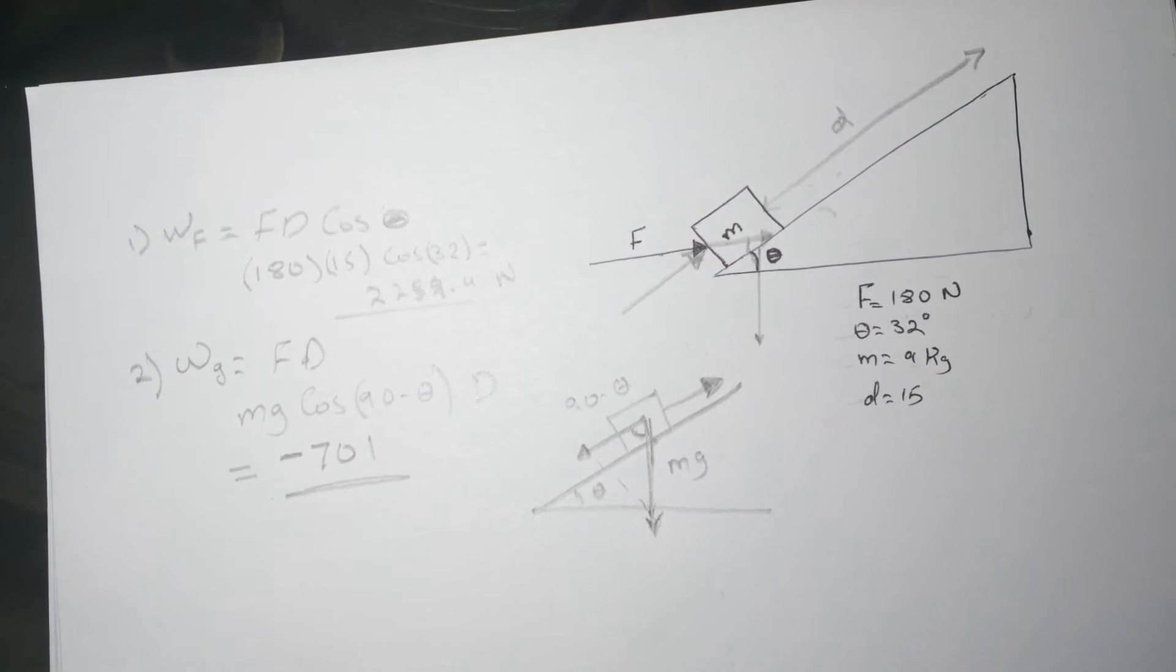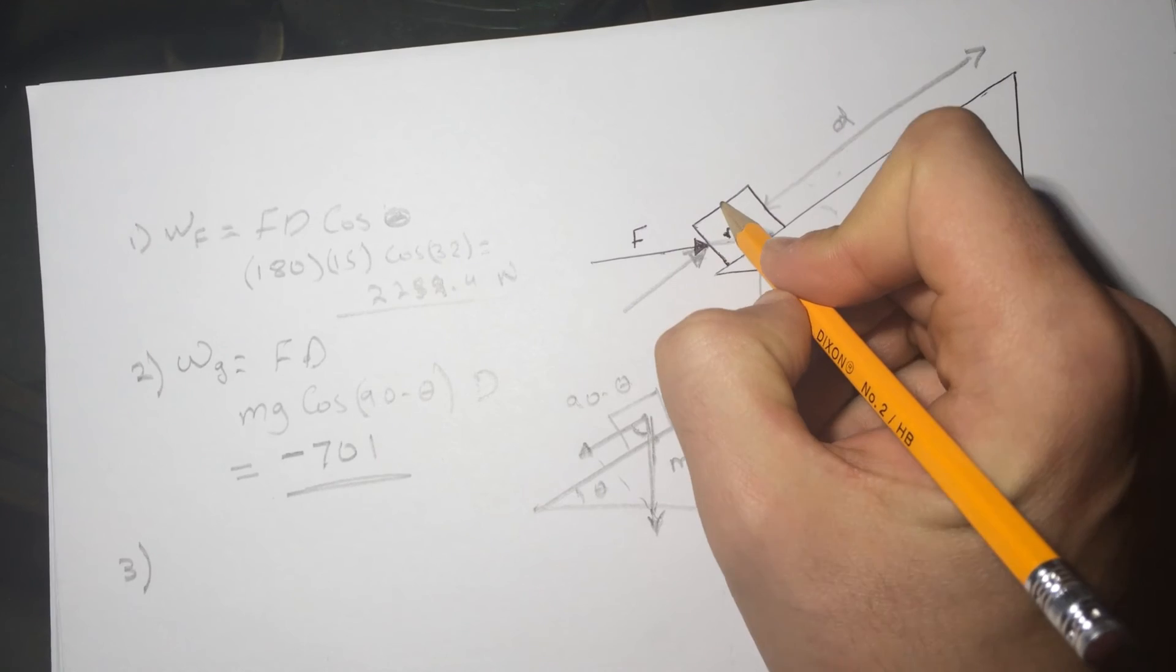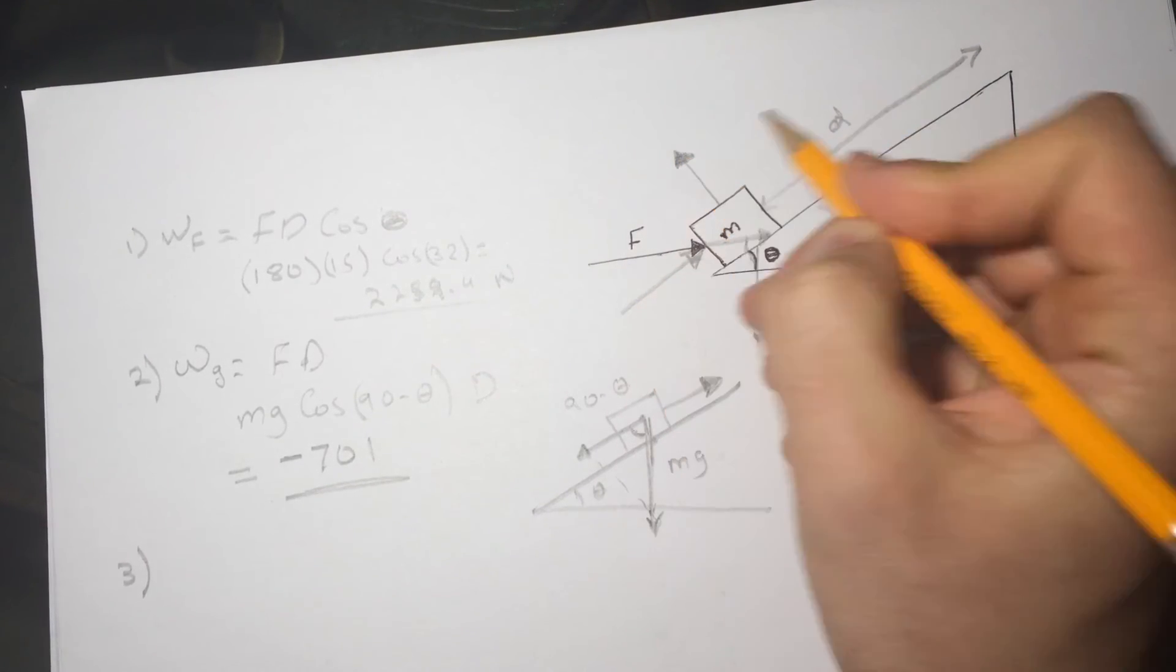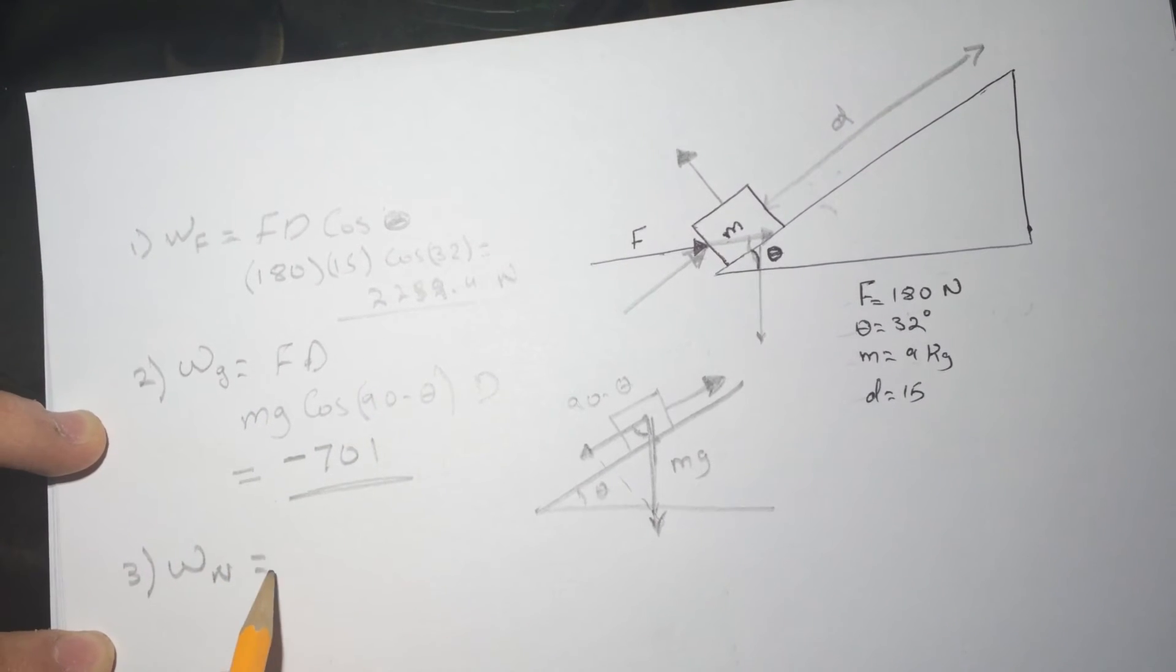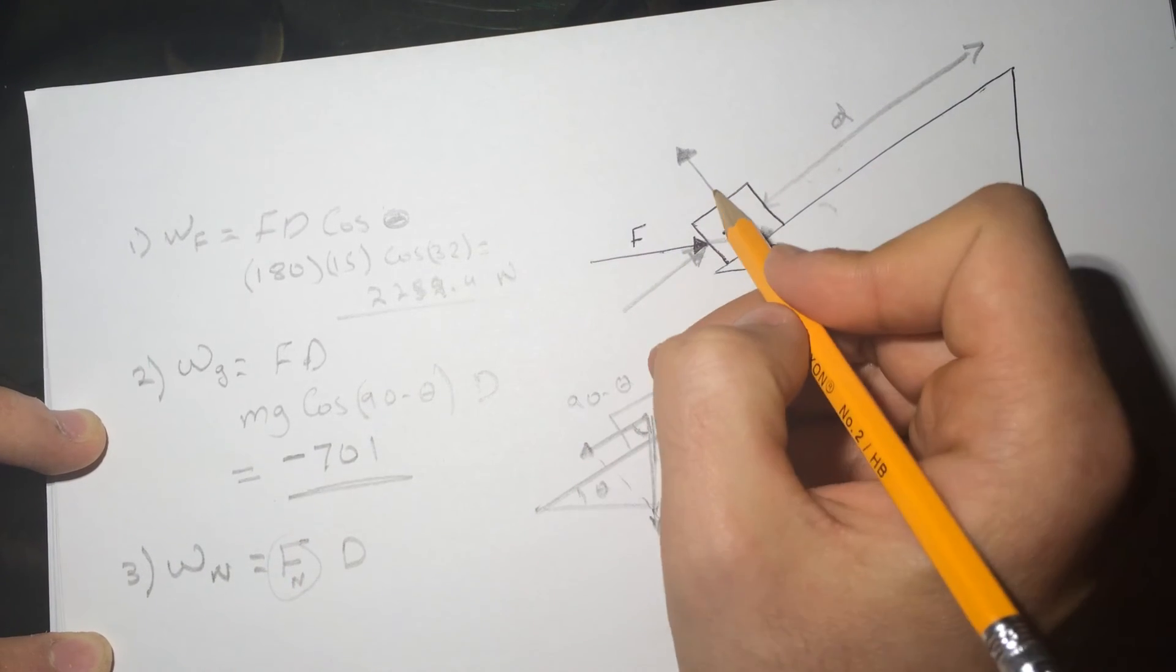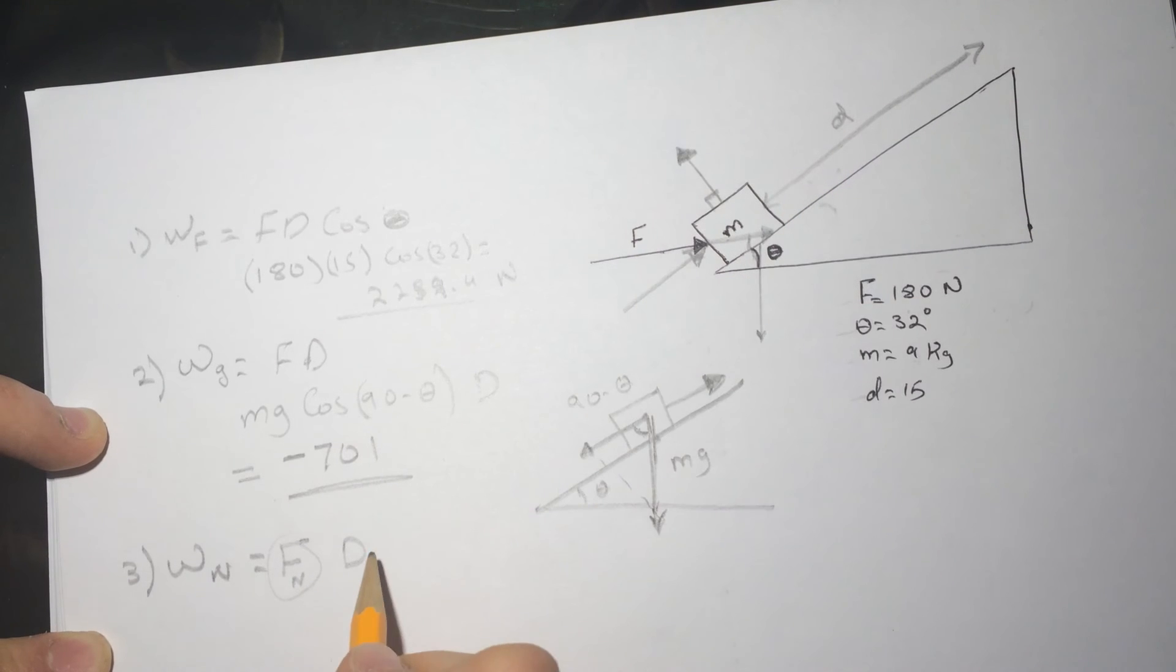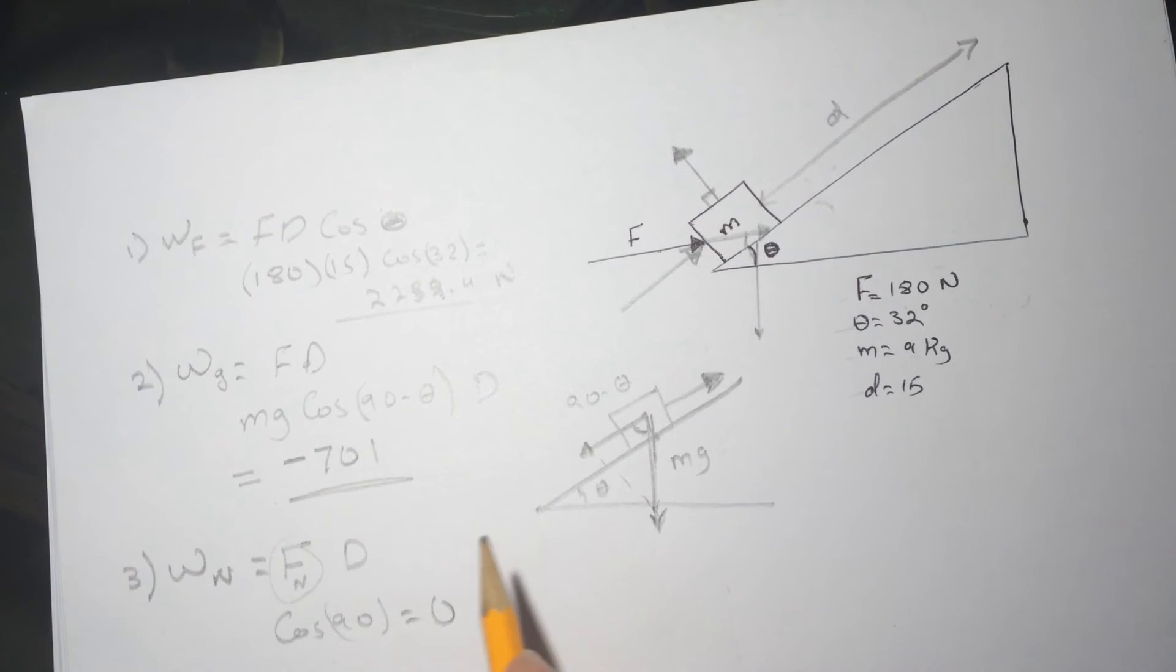All right, for the third one it's asking how much work is done by the normal force of the slope on the box during this displacement. So the normal force is affecting this way and if you look at it, the work of the normal force will be force times d. But the normal force here is perpendicular to it, so if you do the cosine of 90 degrees it will be 0. So this work total work is 0.